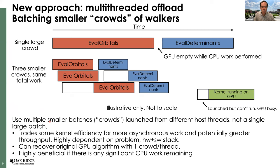We trade off a little kernel efficiency by having smaller chunks of work for greater asynchronicity. We could choose to use just one crowd and recover the original GPU algorithm. The point for other applications: yes, do think about generating large kernels to occupy the GPUs, but also pay attention to the gaps and whether you can break up the work to get better overall throughput.